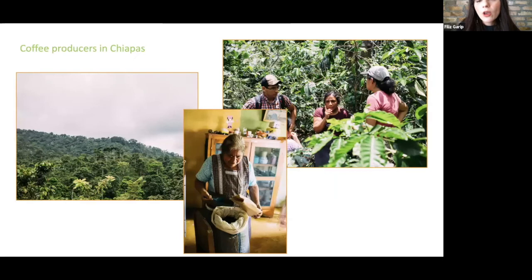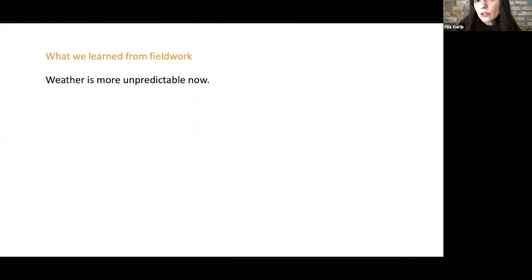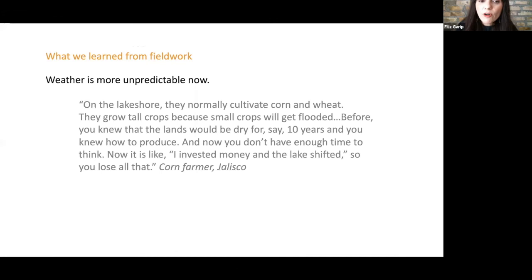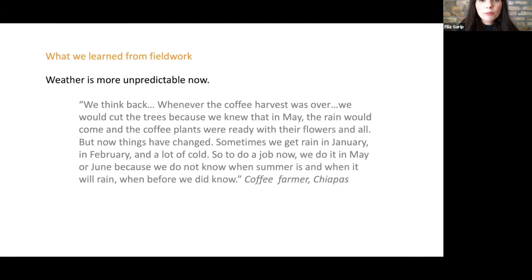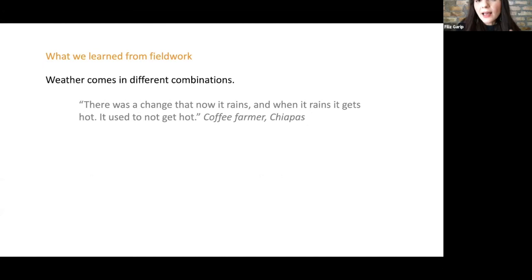We want to talk to coffee producers in Chiapas. Coffee is a plant that's really impacted by weather fluctuations. We also talked to corn growers in Jalisco. Some of the things we learned were not that surprising. First, every farmer recognizes that weather is a lot more unpredictable now. Here's a corn farmer in Jalisco talking about how when you don't know when it's going to rain, you can't even plan where to plant because you don't know how large the lake is going to get. So that unpredictability is a hardship. Similar pattern is noted by coffee farmers in Chiapas. This coffee farmer is saying that whenever the coffee harvest was over, we would cut the trees because we knew that in May, the rain would come. But now it's hard to know. Everything is unpredictable.